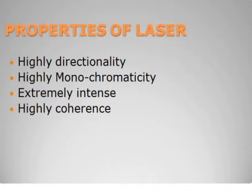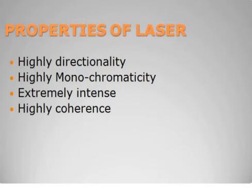Laser sources have some properties which make them more important than other ordinary or conventional sources. First is high directionality. Laser light is extremely directional, or collimated light. Collimated light is light in which rays travel in a fixed, specific direction. When any source emits radiation in a particular direction, that source is called a collimated source. Ordinary sources emit radiation in every possible direction, so ordinary light is divergent, whereas laser light is highly directional.